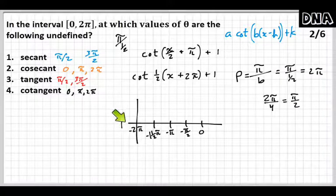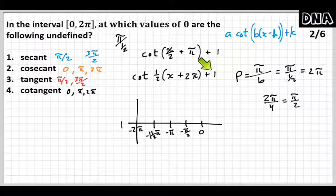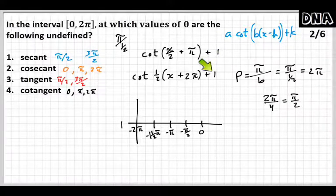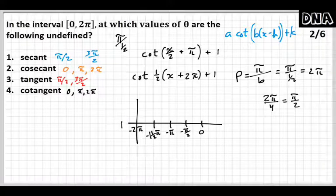Now why did I put one right here for my midline? Because I know what K does. K moves my function up or down, and what is K right now? It's plus one. So I put one right there. That's my midline. Next, I'm going to make this a dotted line just because it's not the x-axis. You don't have to do it like that.